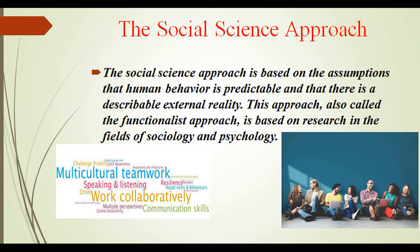The social science approach is based on the assumptions that human behavior is predictable and that there is a describable external reality. This approach, also called the functionalist approach, is based on research in the field of sociology and psychology. Scholars seek to describe and predict behavior by using the social science approach and they frequently rely on quantitative methods.